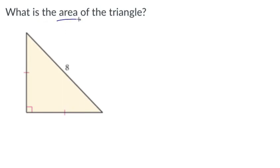In this question we need to find the area of this isosceles right triangle. To find the area of any triangle, we multiply one-half times the base times the height.